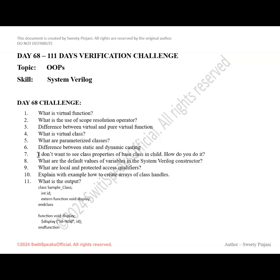This is a bit of a trick question. You don't want to see the class properties of a base class in the child class. You have inherited a class from your base class, but you don't want to see the properties of the base class in your child class. How can you do this?